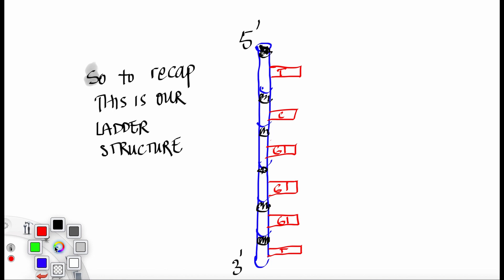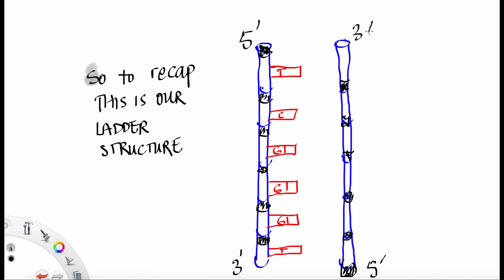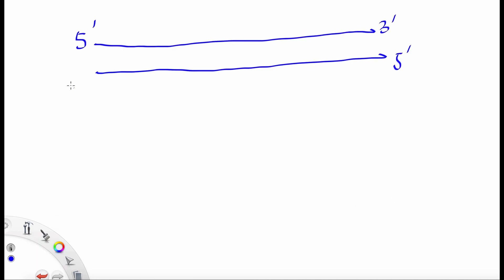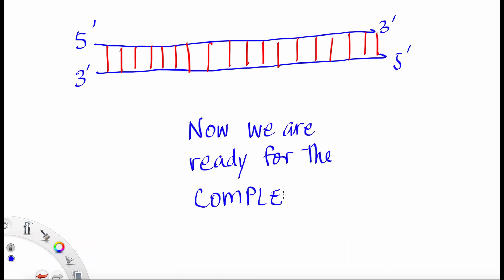So to recap, this is our ladder structure of DNA. We have complementary base pairs. And each of the corners are called 5' or 3'. Let's draw this. In shorthand, we can draw it like this. And we can even reorient this on its side like this. And now we're ready for the more complex version of DNA replication.